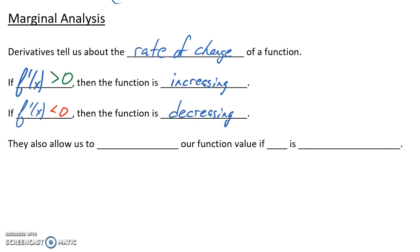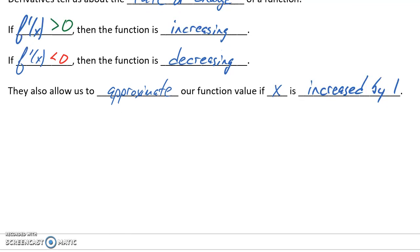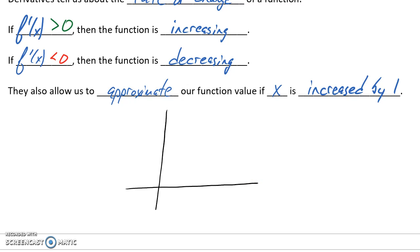We can be even more precise here, rather than just saying increasing or decreasing. Derivatives allow us to approximate our function value if x — say our production level — is increased by one unit. If our derivative is positive, that means our function value is increasing, so if our x value is increased by one, our function value will increase as well. Similarly, if our derivative is negative, we would see our function value decrease as x increases.